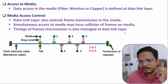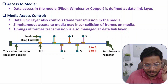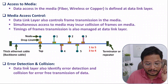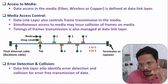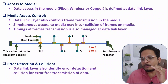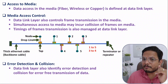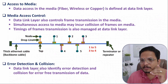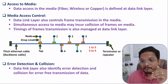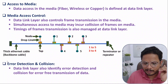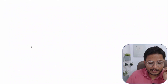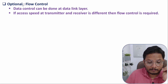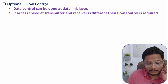The third task is error detection and collision. As mentioned in the OSI model video, the Data Link Layer adds tail bits to frames for error detection. It is essential to identify whether errors are present in a frame for error-free transmission, and that is managed at the Data Link Layer.